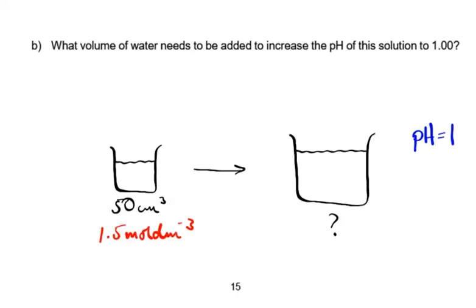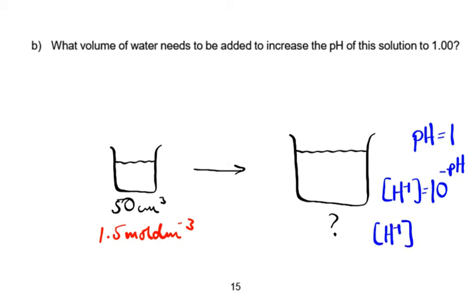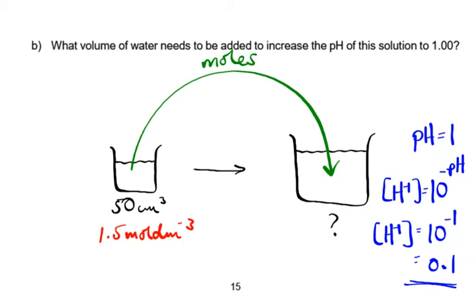The second part is more difficult: we know the original volume and concentration of the acid, and we're told the final pH will be 1. We need to find the volume of water to add. Starting from the final pH, we get the final hydrogen ion concentration: [H⁺] = 10^(−pH) = 10⁻¹ = 0.1 mol dm⁻³. The moles don't change from the small beaker to the large beaker.